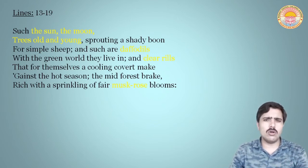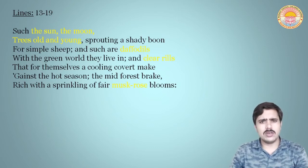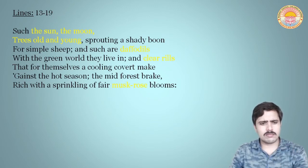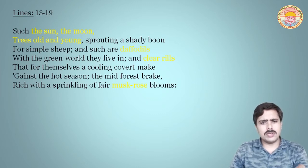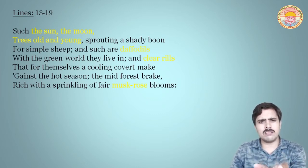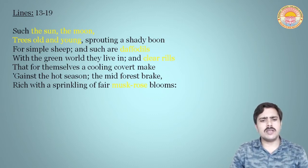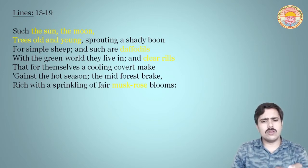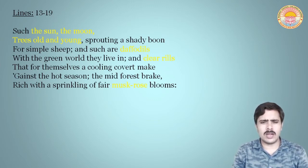The trees, whether old or young, are providing a shady boon to the simple sheep. Likewise, the daffodil flowers growing by the clear rills — the small stream of water — are also providing a cooling place for insects and small beings against this hot season. And even also in the mid forest brake — which is a mass of bushes — rich with the sprinkling of fair musk rose blooms. There the fair musk rose blooms — the wild flower that blooms there.